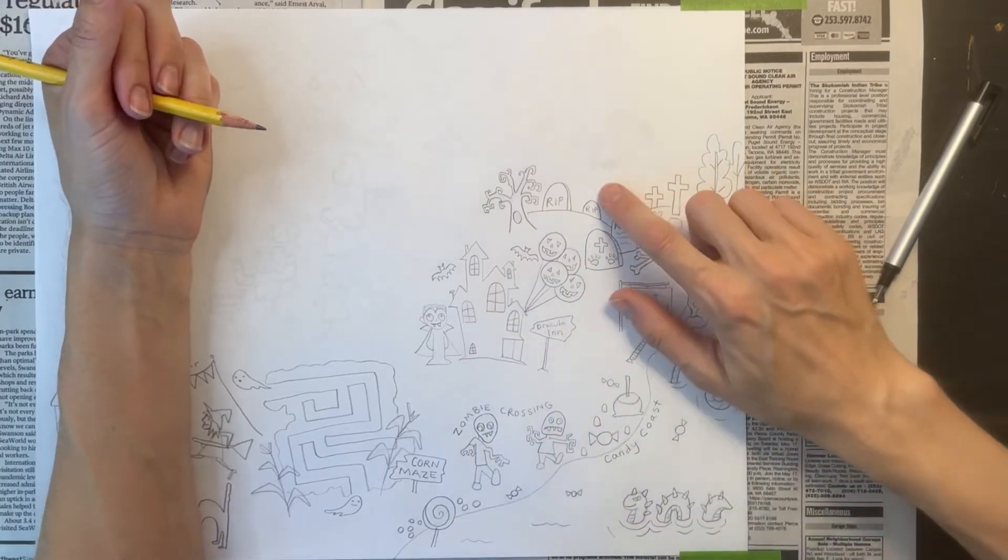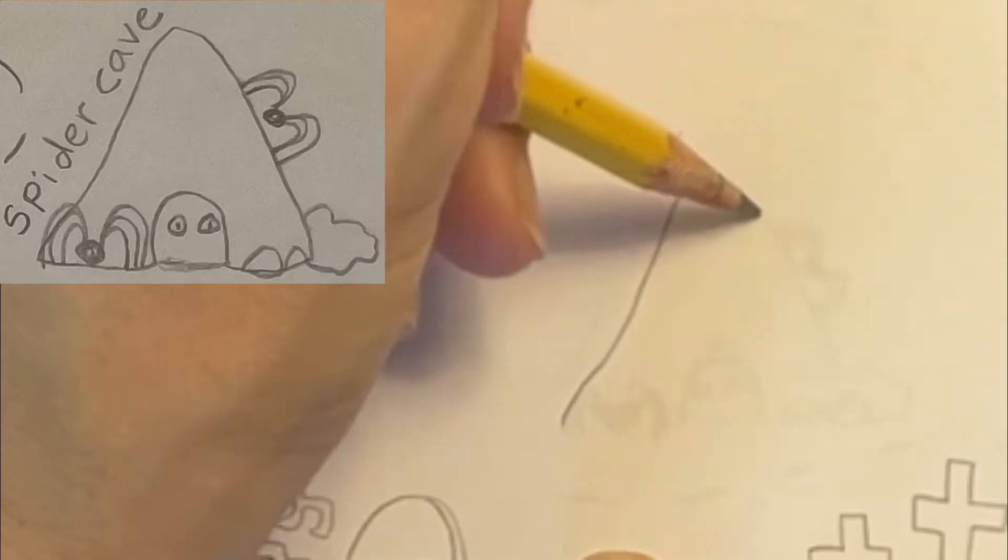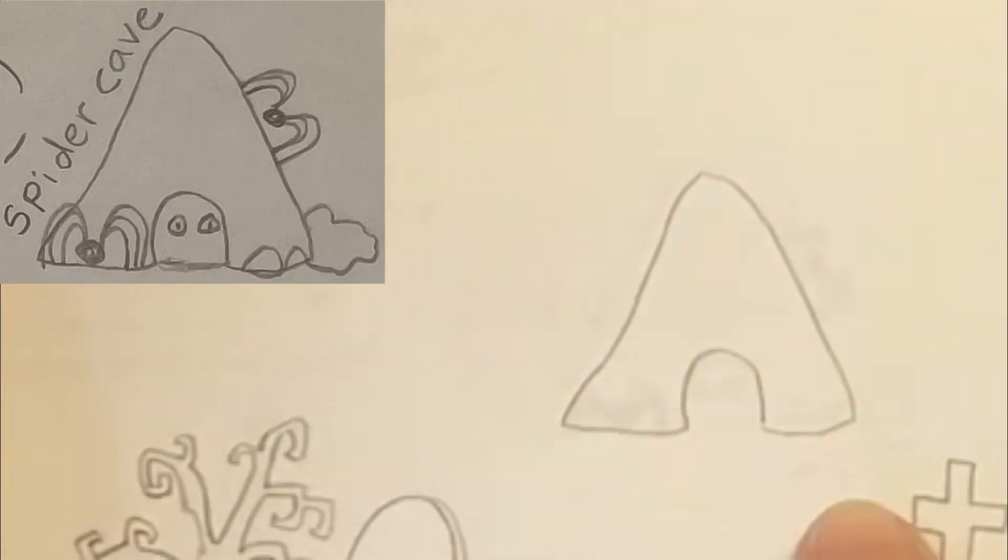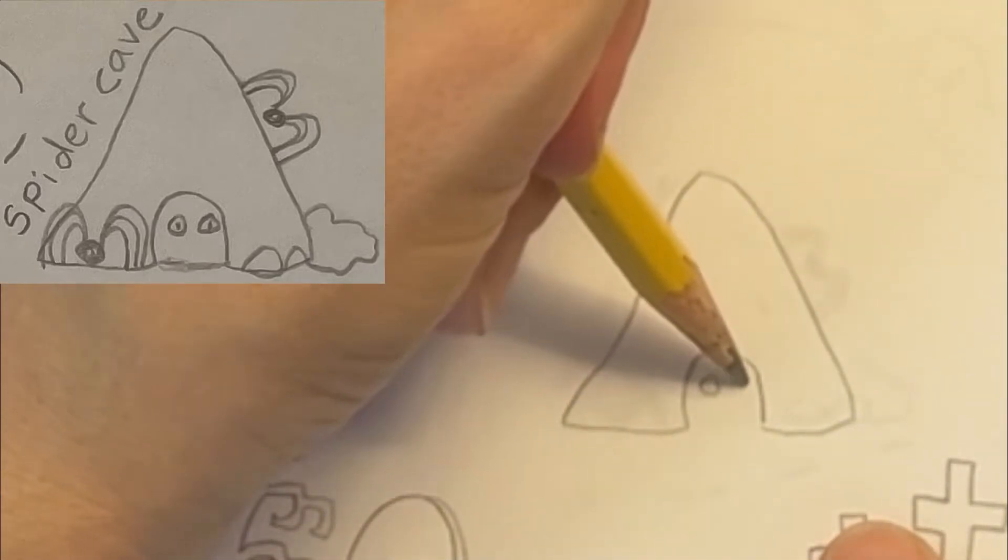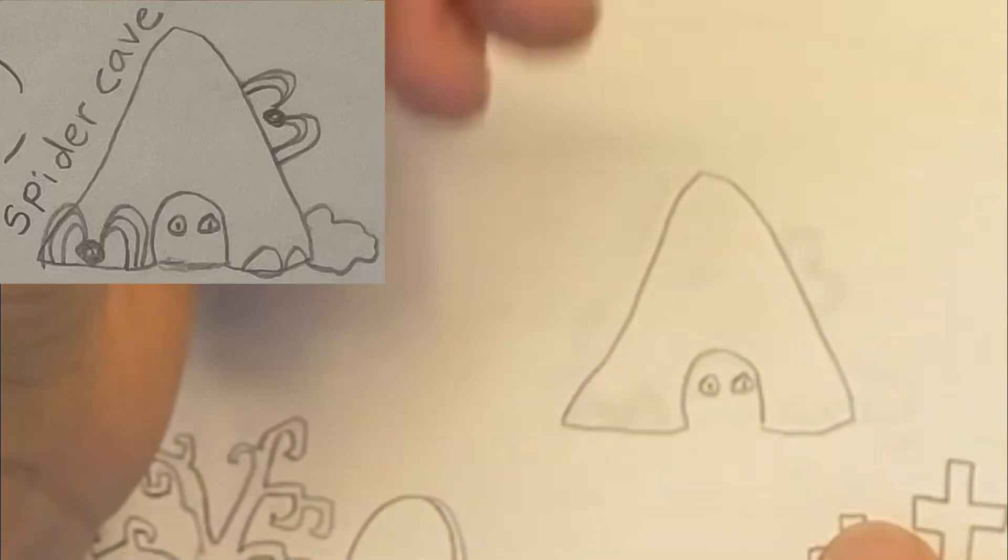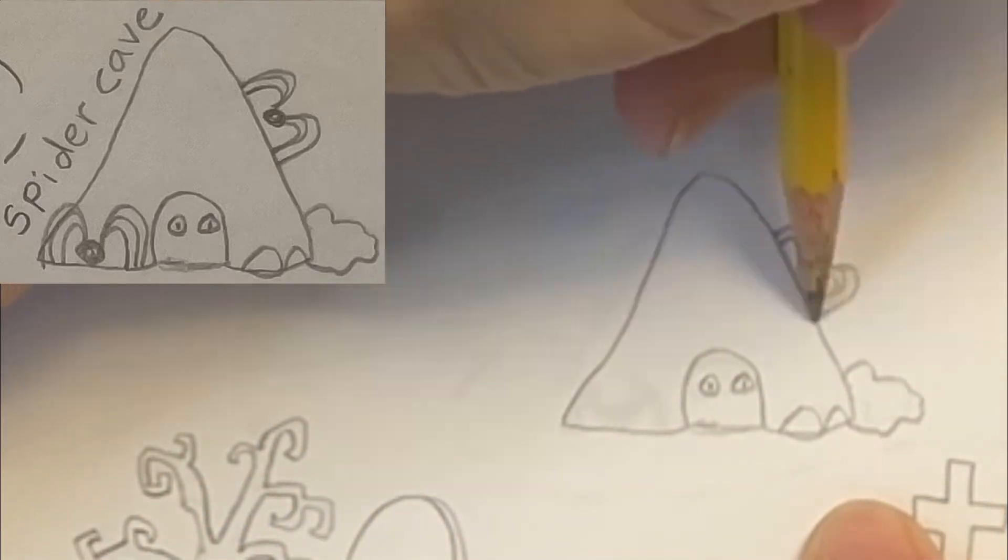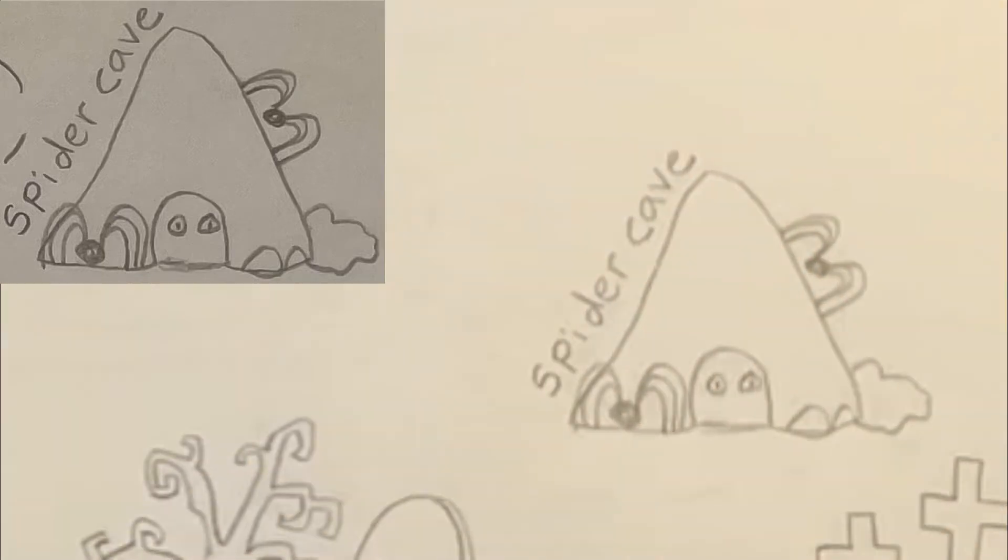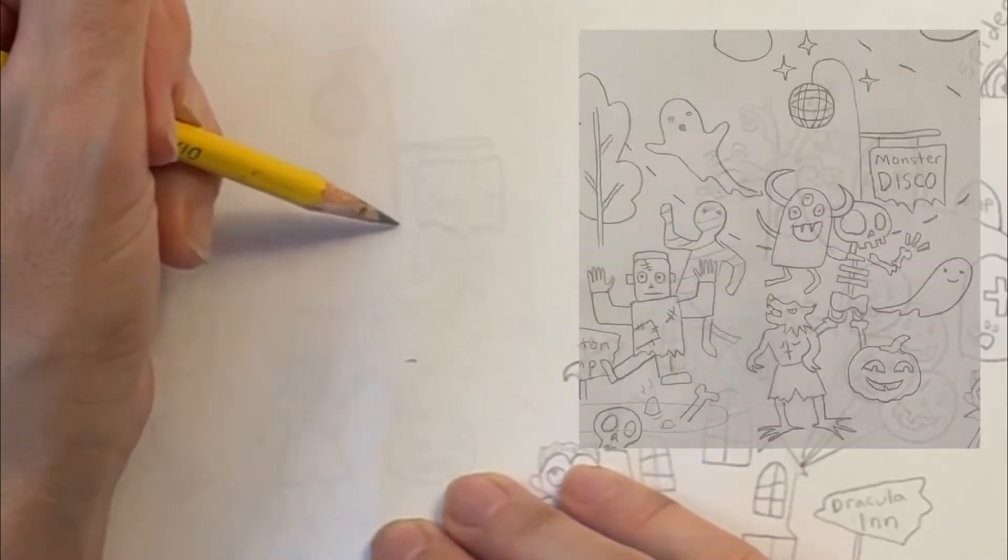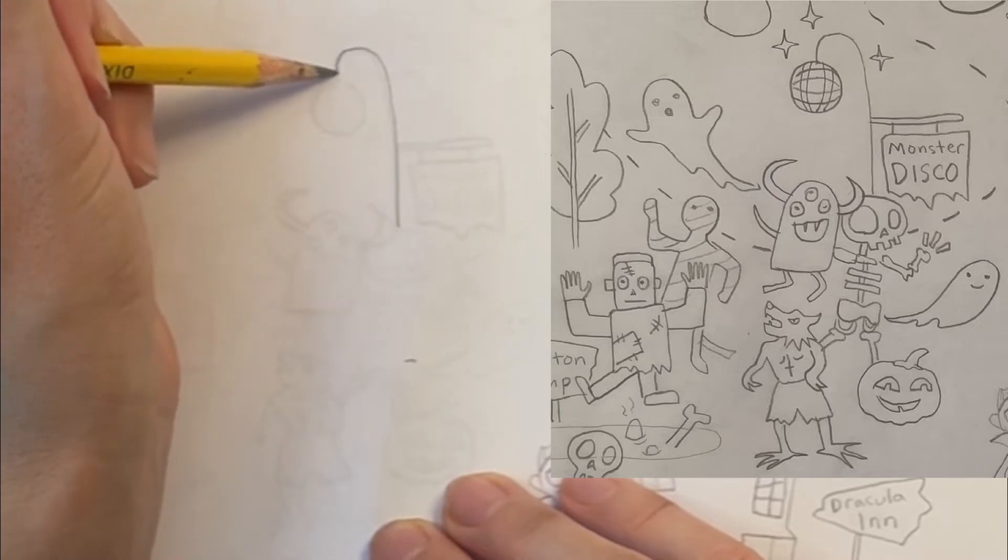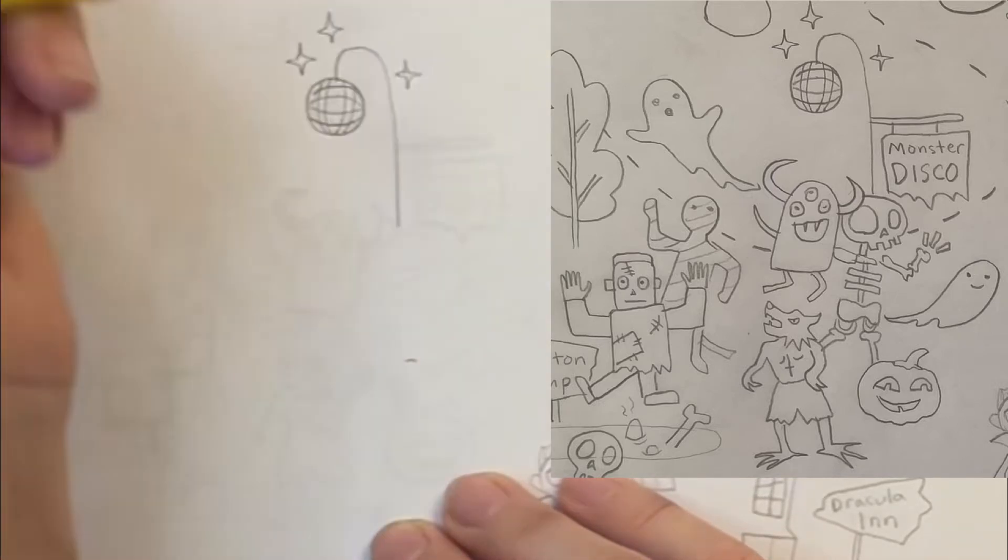Next, I'm traveling further up north to draw a creepy spider cave. I'm drawing a couple eyeballs right at the opening of the cave and a spider on the side of the cave. I thought it would be fun to put a Monster Disco dance right in the middle of my map. I'm starting with a disco ball and a sign.